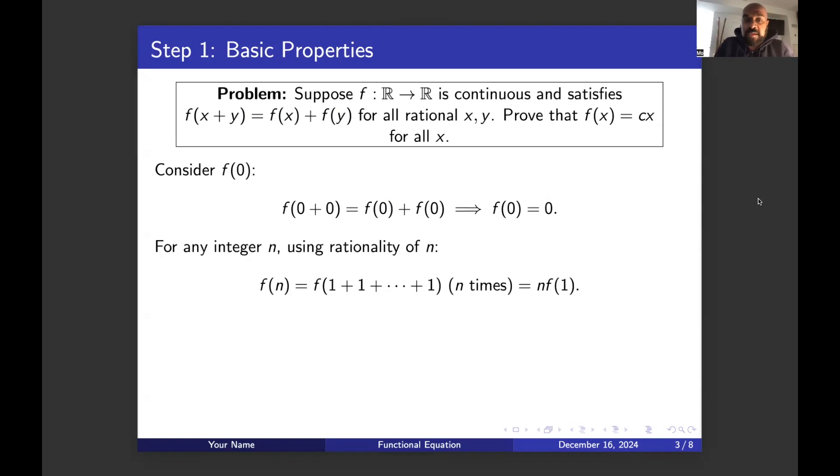And we can do the same thing for any n that is an integer. So if we plug in f of n, that's the same as f of one plus one plus one plus one, etc. We have n copies of one. And that's going to be n times f of one by the same inductive logic. So we get this consequence for any positive integer n.